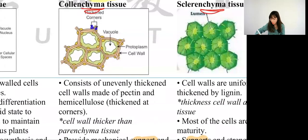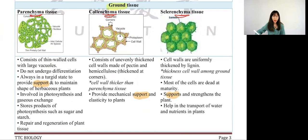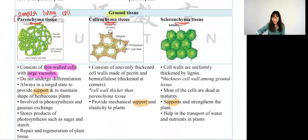When you see round, big cells they confirm it's parenchyma. Collenchyma has a thick corner on the side — this is the corner. So collenchyma has uneven cell wall: some parts thick, some thin. Sclerenchyma looks like a beehive. That is how we differentiate parenchyma, collenchyma, and sclerenchyma. Parenchyma tissue has thin cell wall and large vacuole. They are also known as the simplest living cell. Even though they are the simplest, they have the most functions among the three. The reason they are called the simplest is because they do not undergo differentiation — no specific function but many general functions.